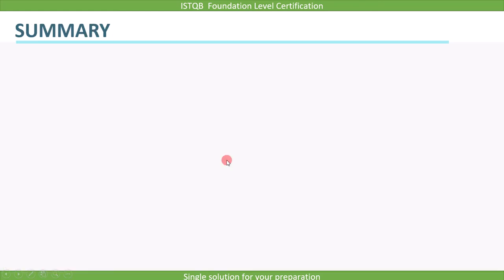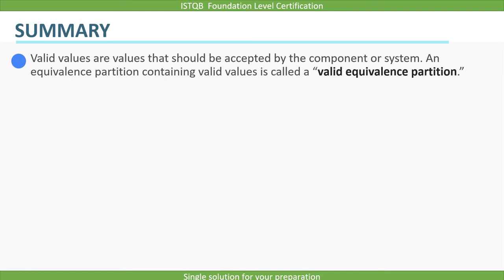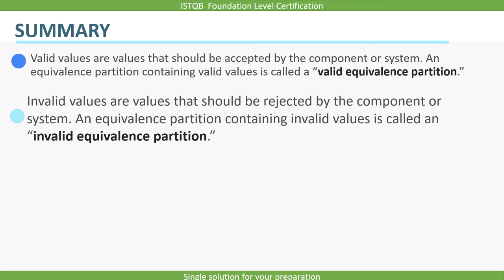Now let's summarize the points we covered. Valid values are values that should be accepted by the component or system; an equivalence partition containing valid values is called a valid equivalence partition. Invalid values are values that should be rejected by the component or system; an equivalence partition containing invalid values is called an invalid equivalence partition.